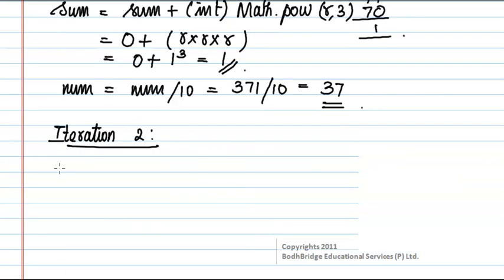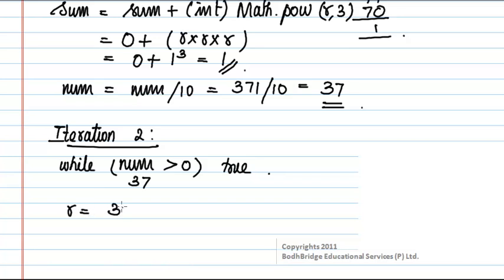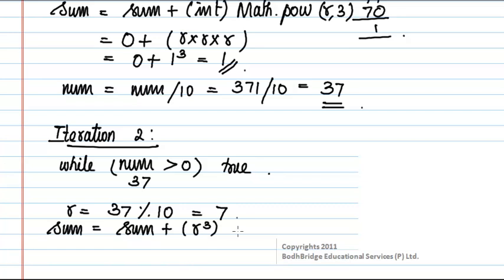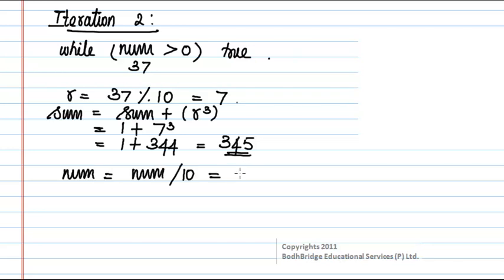In the next iteration, the value of number is checked — 37 is greater than 0, so the condition is true. We find the remainder when 37 is divided by 10, which gives 7. Then sum = sum + (int) Math.pow(r, 3), so sum is 1 plus 7 cubed. The value of 7 cubed is 343, so the result is 344. Then the number 37 is divided by 10, giving a quotient of 3.